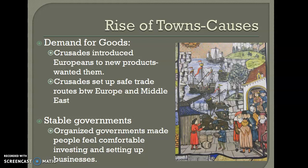The other big cause of the rise of towns is stable governments. In feudalism, kings weren't powerful — they needed their lords to give them money and soldiers. But because of the Crusades, many powerful lords died off. The kings reclaimed that land and suddenly began growing in power, creating a more stable environment where towns could flourish. As we talked about with Rome, if it's not stable, nobody's going to trade. With strong central governments from kings, people felt comfortable investing in businesses.